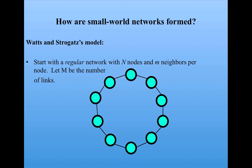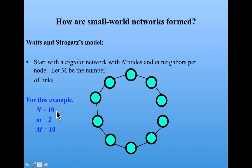The model works by starting with a regular network. By regular, I mean that every node has the same pattern of connectivity. For example, this node is connected to each of its neighbors on either side, and similarly this node has the same pattern of connections. We say there are n total nodes, m neighbors per node, with capital M being the number of links. For this example, we have 10 nodes, each node has two neighbors, and thus there's a total of 10 links.